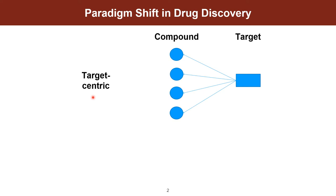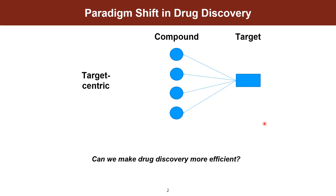To motivate this project, I'll first discuss current drug discovery approaches, which are generally target-centric. What this means is that you have a protein target of interest, you build a functional assay around this target, and then use that assay to conduct high throughput screens against large compound libraries hoping for some hits. Now this approach is inherently limited because you have to develop a separate individual functional assay for each target. So this begs the question: can we make drug discovery more efficient?